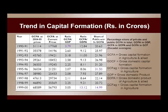The trend in capital formation shows that there has been continuous increase in gross capital formation in agriculture. At constant prices of 2004-05, it increased from 51,114 to 69,000 crores of rupees. At current prices it has also been increasing. However, the ratio of gross capital formation in agriculture to gross domestic product in agriculture has been relatively low, and the ratio of gross capital formation to total GDP has also been comparatively small due to the smaller share of agriculture GDP.